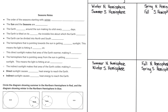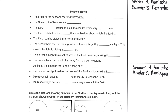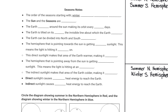All right, let's start with the blanks. The order of the seasons starts with Winter, and then we have Spring. After Spring, we have Summer. And Summer is followed by Fall, or also called Autumn.